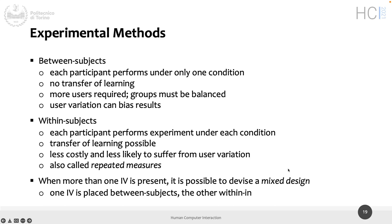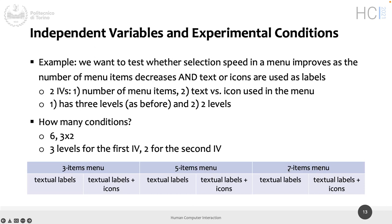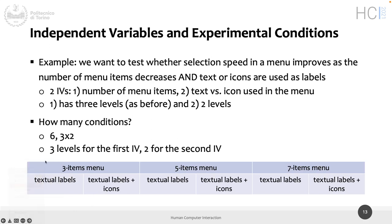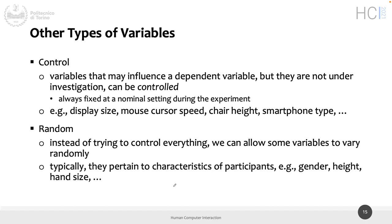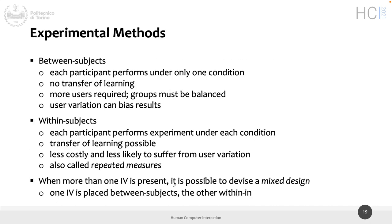Another component of a control experiment we have to decide is how to run the study. Last time we took a linear approach for exemplifying independent variable levels: participant number one would get all conditions in order — first the three menu items with textual labels, then with icons, then five menu items — so every participant gets all conditions in order.